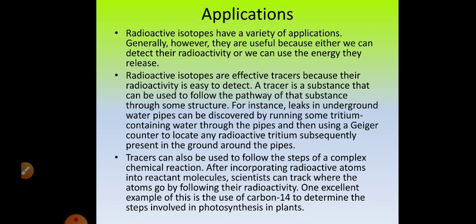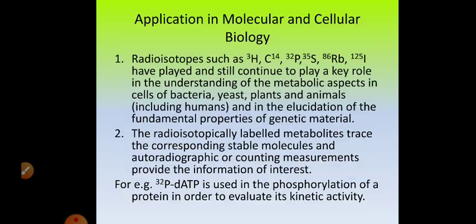A tracer can also be used to follow the steps of a complex chemical reaction. After incorporating radioactive atoms into reactant molecules, scientists can track where the atoms go by following their radioactivity — finding out where the atom goes and what path it follows. One excellent example is using the C-14 isotope to determine the steps involved in photosynthesis in plants. Not only radioisotopes but stable isotopes are also used.